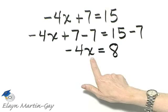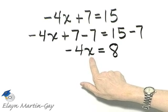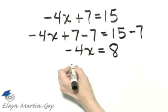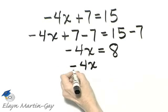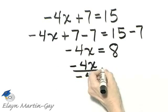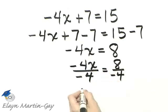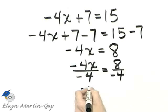Now we'll solve or get the variable alone by dividing both sides by the coefficient of x which in this case is negative 4. So I'll divide the left side by negative 4. I'll divide the right side by negative 4 and then look what happens. The left side becomes 1x or simply x.